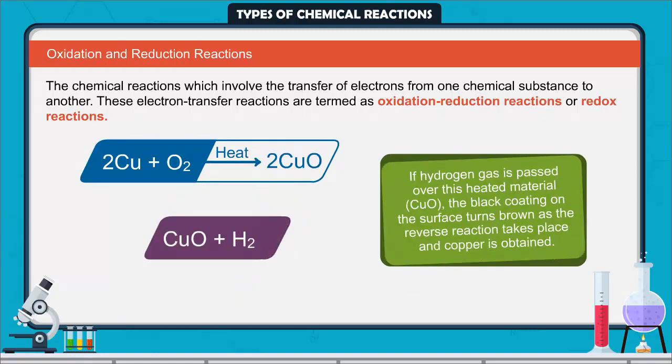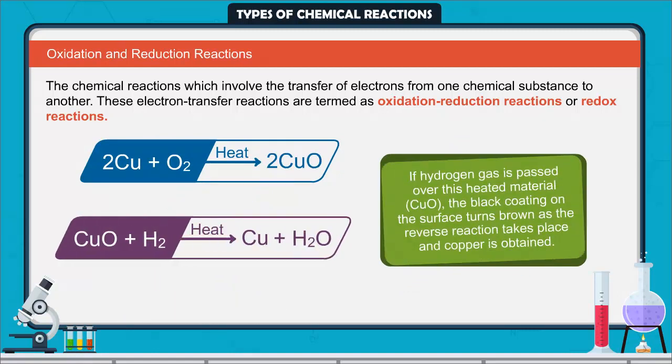If hydrogen gas is passed over this heated material, the black coating on the surface turns brown as the reverse reaction takes place and copper is obtained.